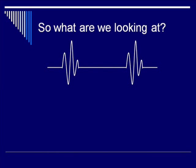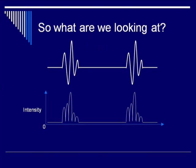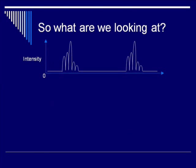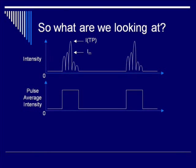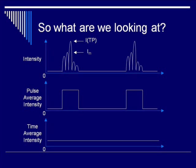Here we have a sample ultrasound pulse showing peak compression and peak rarefaction. Below is the graph for the intensity of that wave — intensity is all positive because it's a magnitude and doesn't have a negative value. You can see labeled ITP, the temporal peak intensity. Below that is the pulse average intensity, which is zero when the pulse is not on, then shows a significantly higher number when the ultrasound is pulsing. The time average intensity is not much above zero because you're averaging that intensity down over the entire time the probe is on.